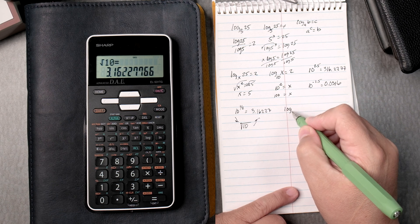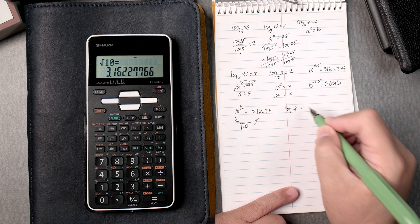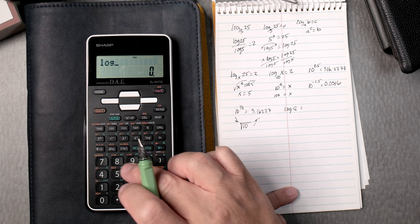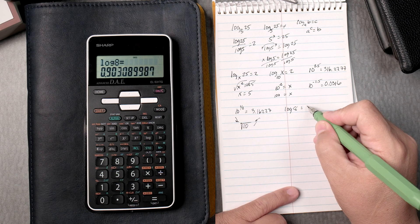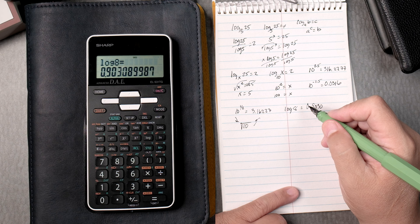How about if I took the log of 8? That's automatically base 10. So we'd say log 8 equals, 0.9030, right?